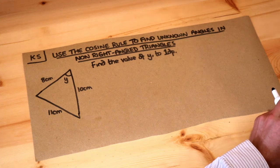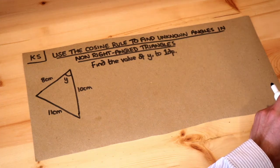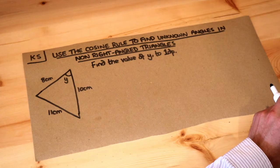Hello and welcome to this Dr. Ross-Math's key skill video on using the cosine rule to find unknown angles in non-right-angle triangles.